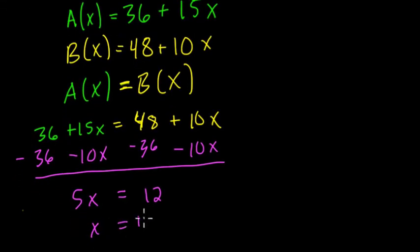And divide both sides by 5, X is 12 over 5. If you want to go further, 5 goes into 12 twice with a remainder of 2, or 2 fifths, which is 2.4.